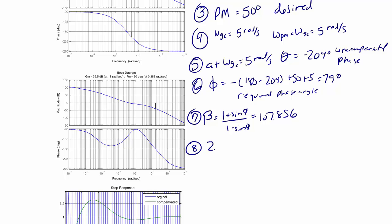Step eight is to calculate z lag, which is equal to 0.1 times omega pm or 0.5 radians per second. And this is also equal to 1 over t lag.